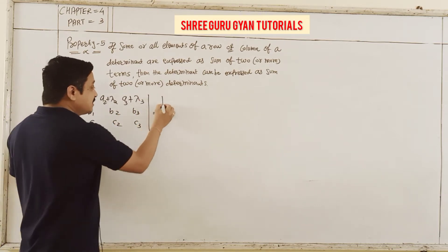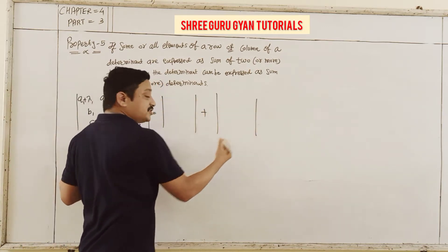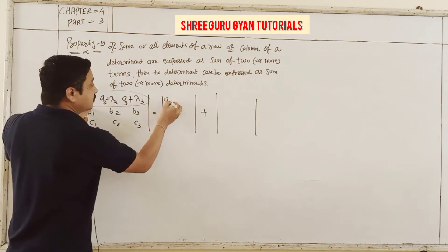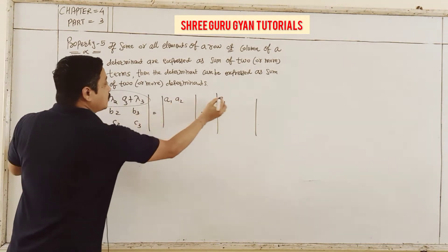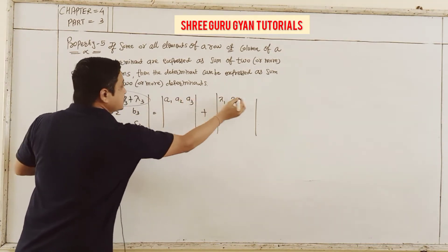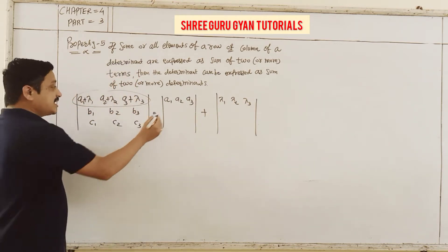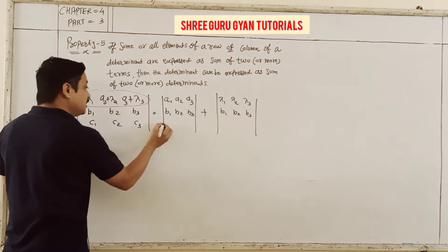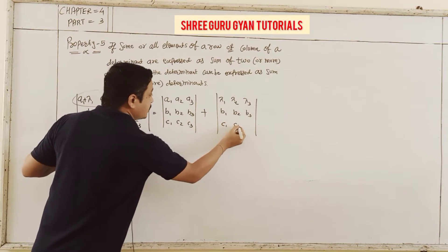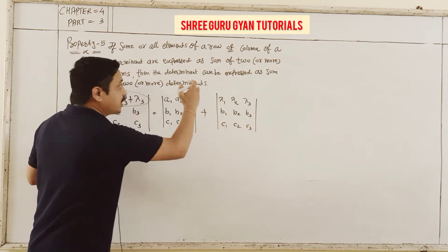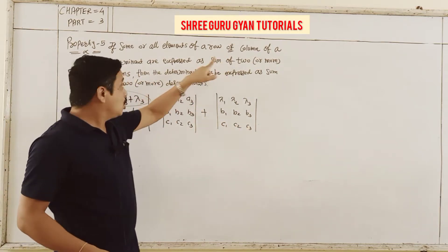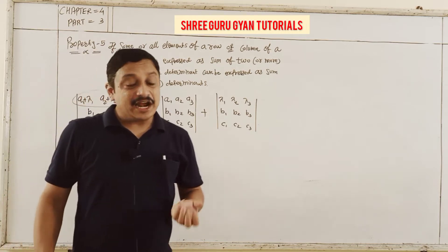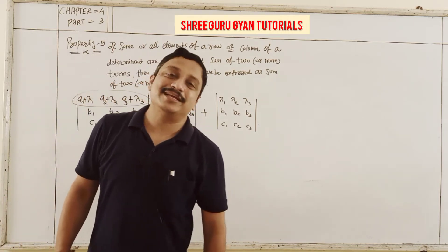You can express this as the sum of two determinants. Write the first row in two forms: A1, A2, A3 with b1, b2, b3 and c1, c2, c3 — and lambda1, lambda2, lambda3 with b1, b2, b3 and c1, c2, c3. That's how expressions with sums of two or more terms in a row or column can be expressed as two or more determinants. I will now prove how they can be expressed as the sum of two parts.